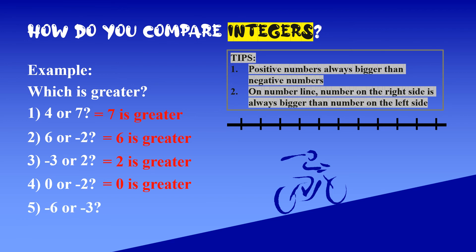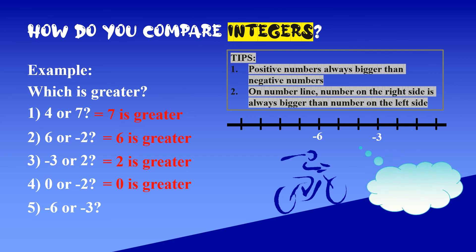For negative 6 or negative 3, students might be confused. Use the number line: arrange from 0 to negative 1, negative 2, negative 3, negative 4, negative 5, negative 6. Then compare which is further right. Negative 3 is to the right of negative 6, so negative 3 is greater than negative 6.